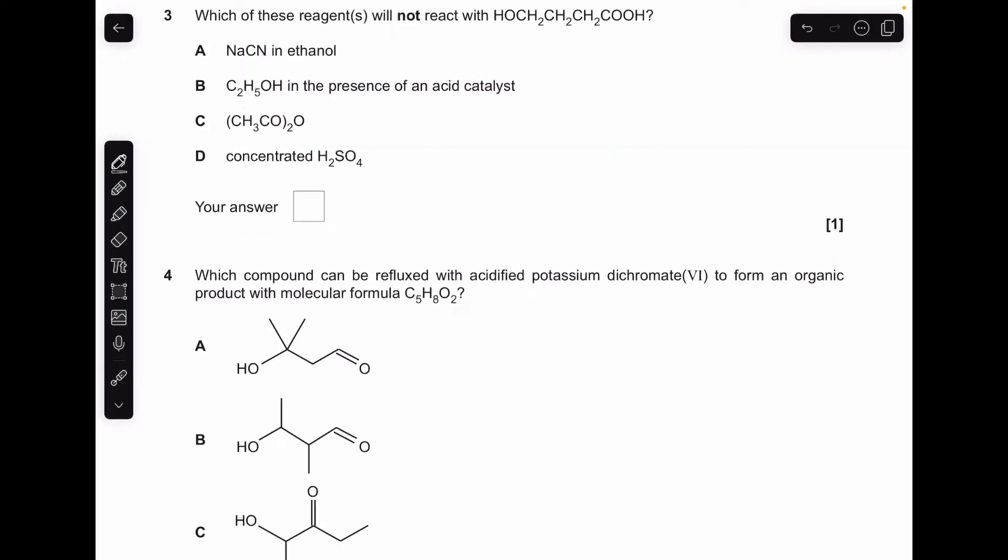Number three, testing your knowledge of reactions of organic functional groups. First thing, we'll identify the functional groups in this molecule. We've got a primary alcohol on the left-hand side, and that's a carboxylic acid on the right. So now we've got those, which reagent will not react with this molecule. Sodium cyanide in ethanol is actually the answer. It won't react with either of those functional groups.